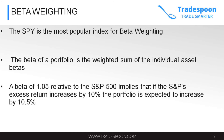The beta of a portfolio is the weighted sum of individual assets' betas. You see how much exposure you have to each stock and what is the correlation of that stock's movement with SPY. A beta of 1.05 relative to the S&P 500 implies that if the S&P goes up by 10%, the portfolio is expected to increase by 10.5%. That means you hold stocks that are more volatile than the market. If the beta is 2, your stocks will sell off twice as fast as the S&P 500.